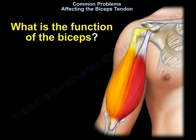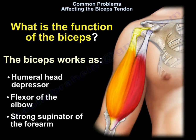What is the function of the biceps? The biceps works as a humeral head depressor. It is a flexor of the elbow and it is a strong supinator of the forearm.